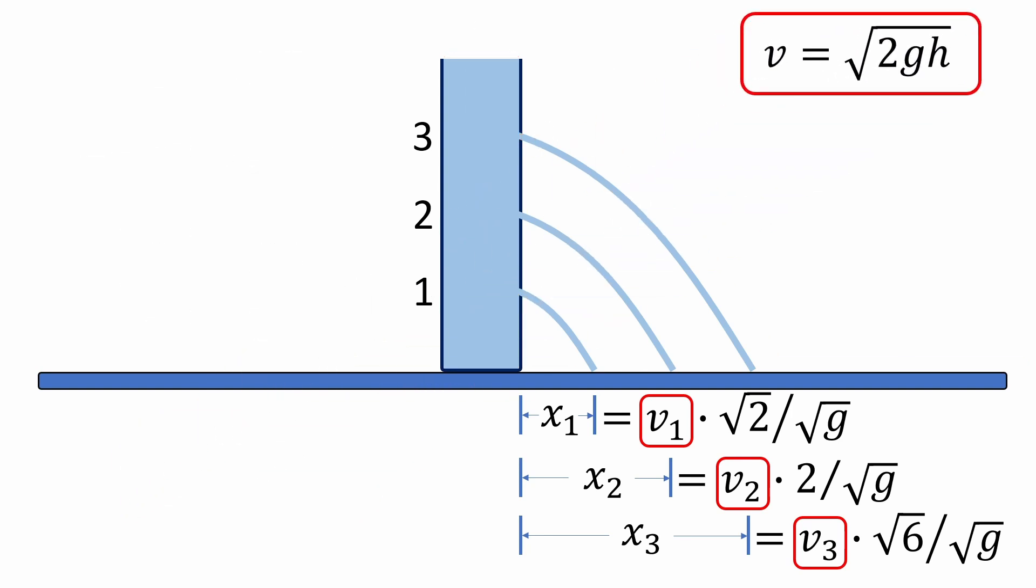Now we can calculate the velocities. Plugging in the height to the water column above each hole, we get the following expressions. Let's plug v1, v2, and v3 into our formulas below.